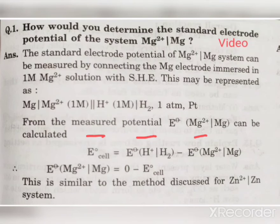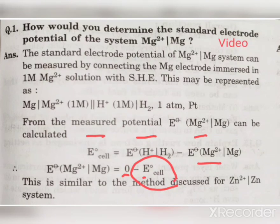Here, SHE is on the cathode side and the magnesium electrode is on the anode side. Since E°(SHE) = 0, the formula becomes: E°_cell = 0 − E°(Mg²⁺/Mg). The E°_cell value is obtained from the reading of the actual cell. From this, we can calculate the standard electrode potential for the system Mg²⁺/Mg.